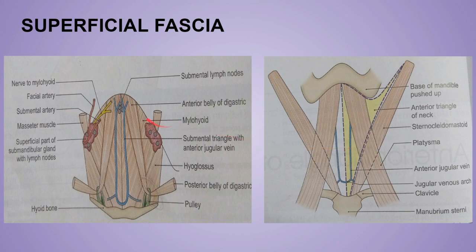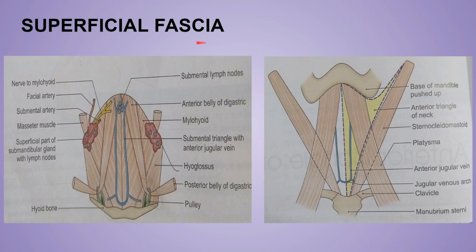The third structure in the superficial fascia is the submental lymph nodes. The fourth is the anterior transverse cutaneous nerve of the neck. So the four contents of the superficial fascia are: the platysma muscle, the anterior jugular vein and jugular venous arch, the submental lymph nodes, and the anterior transverse cutaneous nerve of the neck.